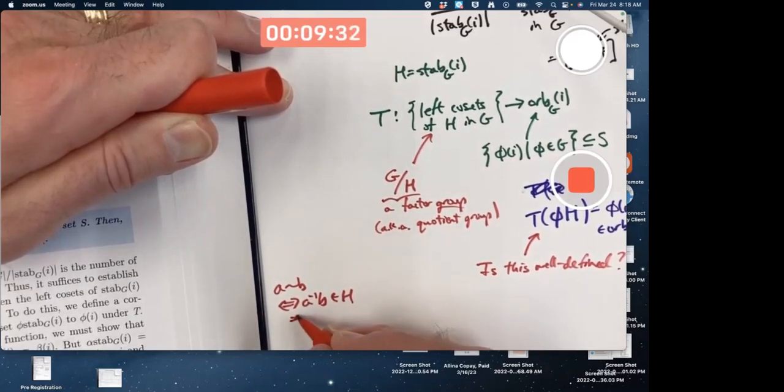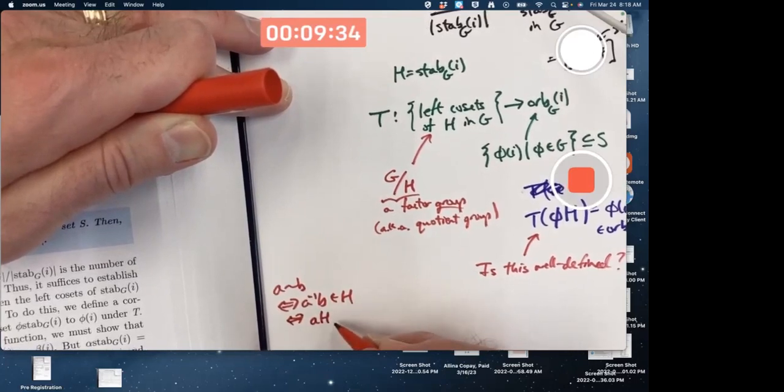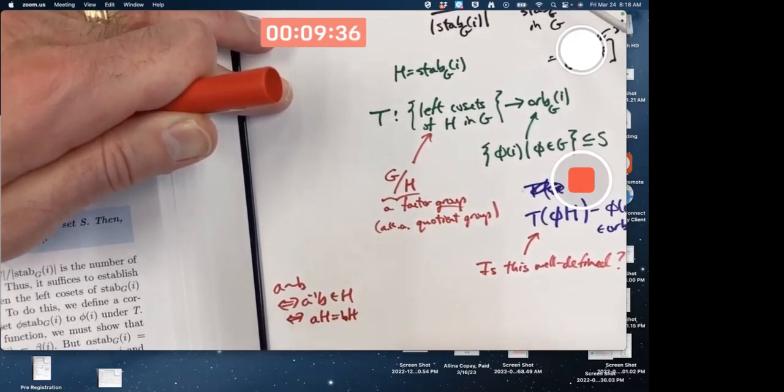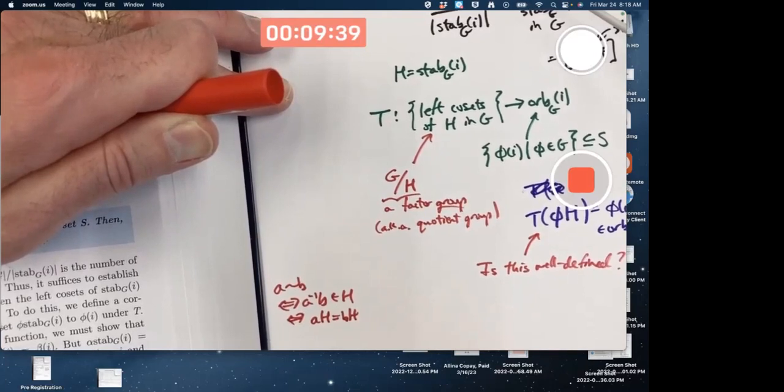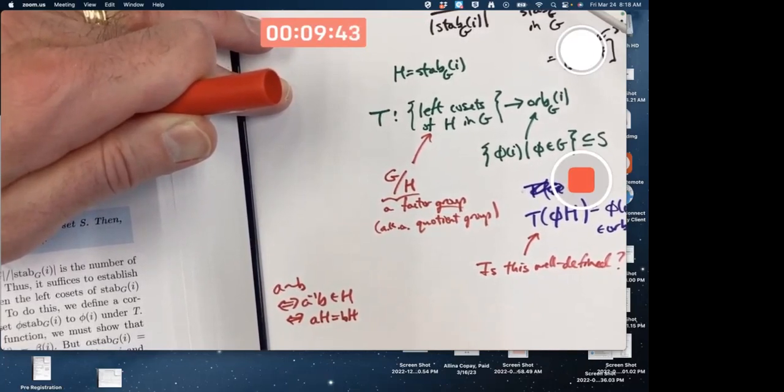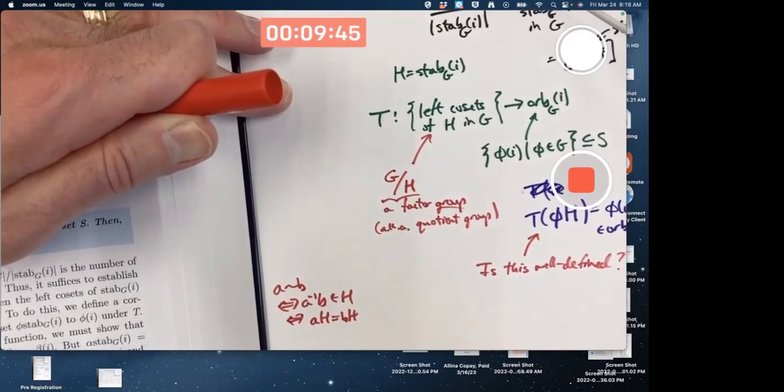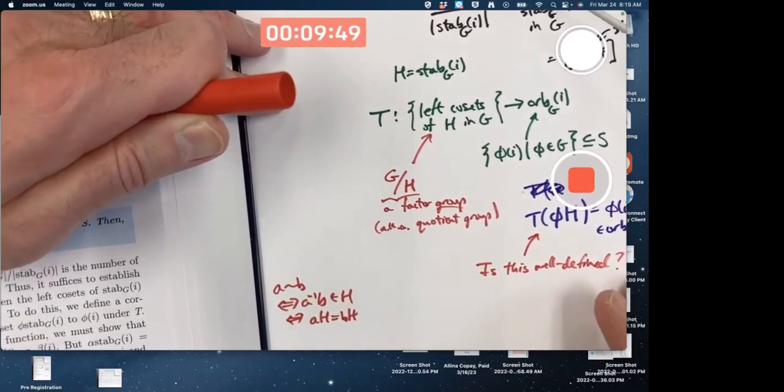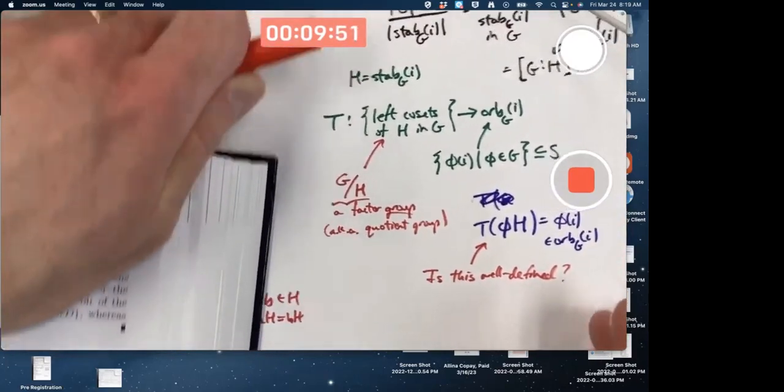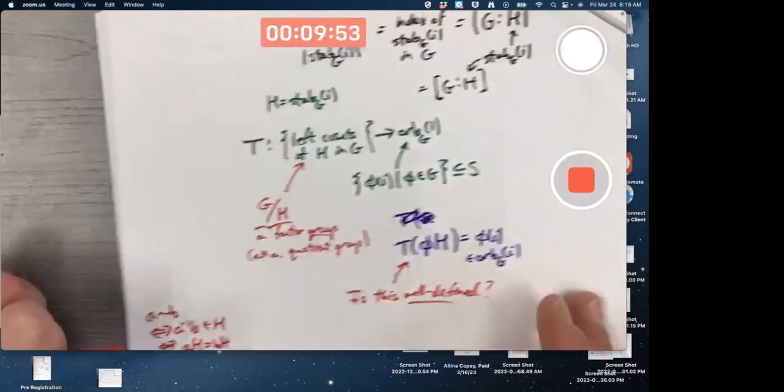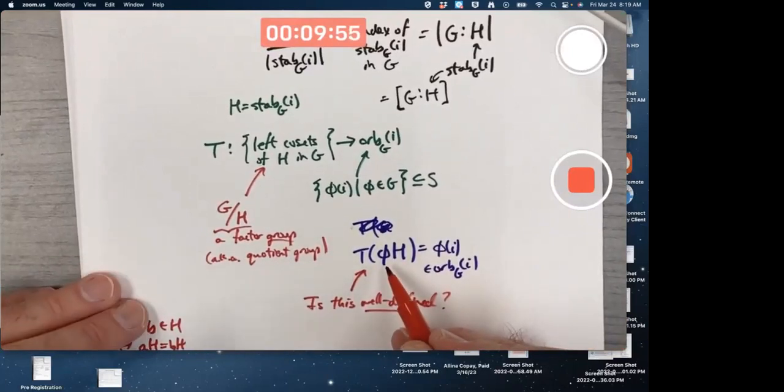And it was equivalent to A equaling B, AH equaling BH, the left cosets being the same. It was a property, it was that lemma about cosets, property of cosets. And that's related to this being well-defined. If we had a different coset representative, would we get the same answer? That's the issue.